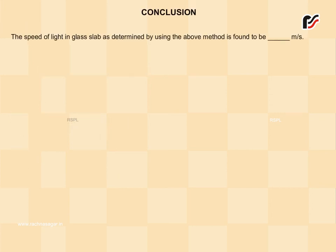Conclusion: The speed of light in glass slab, as determined by using the above method, is found to be _____ m/s.